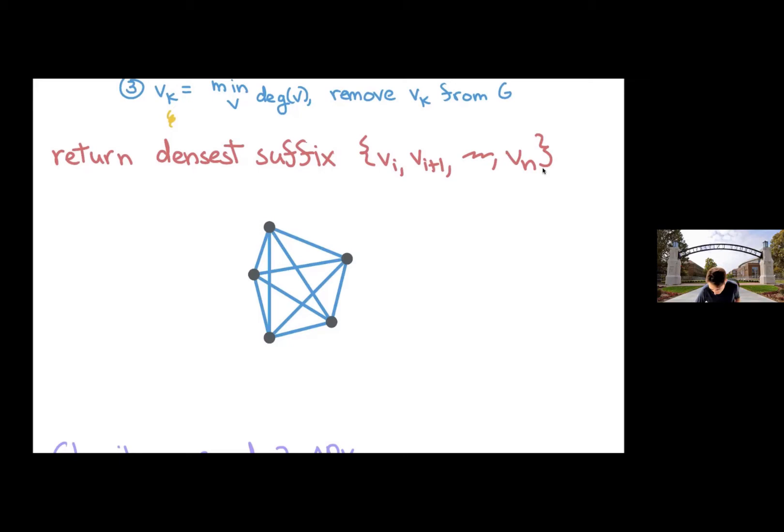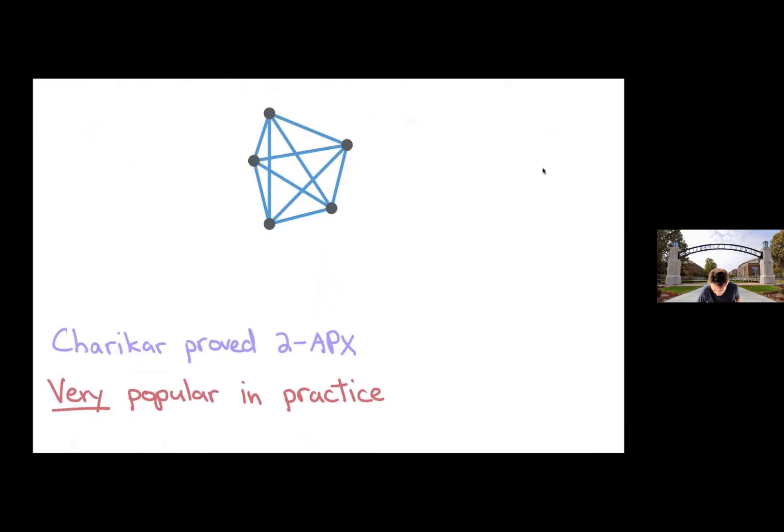So a very nice heuristic. Moses proved that this will give you a two approximation for the densest subgraph problem. And this heuristic is just really popular in practice. Of course, you can implement it very fast and very easily and so forth.